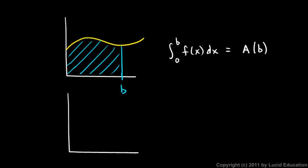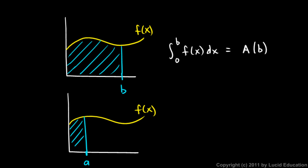Let's draw the graph again — the same function f. Imagine some x value here, x equals a, and imagine this area. Well, that area will be the integral from 0 to a of f(x) dx, and that will be A(a).